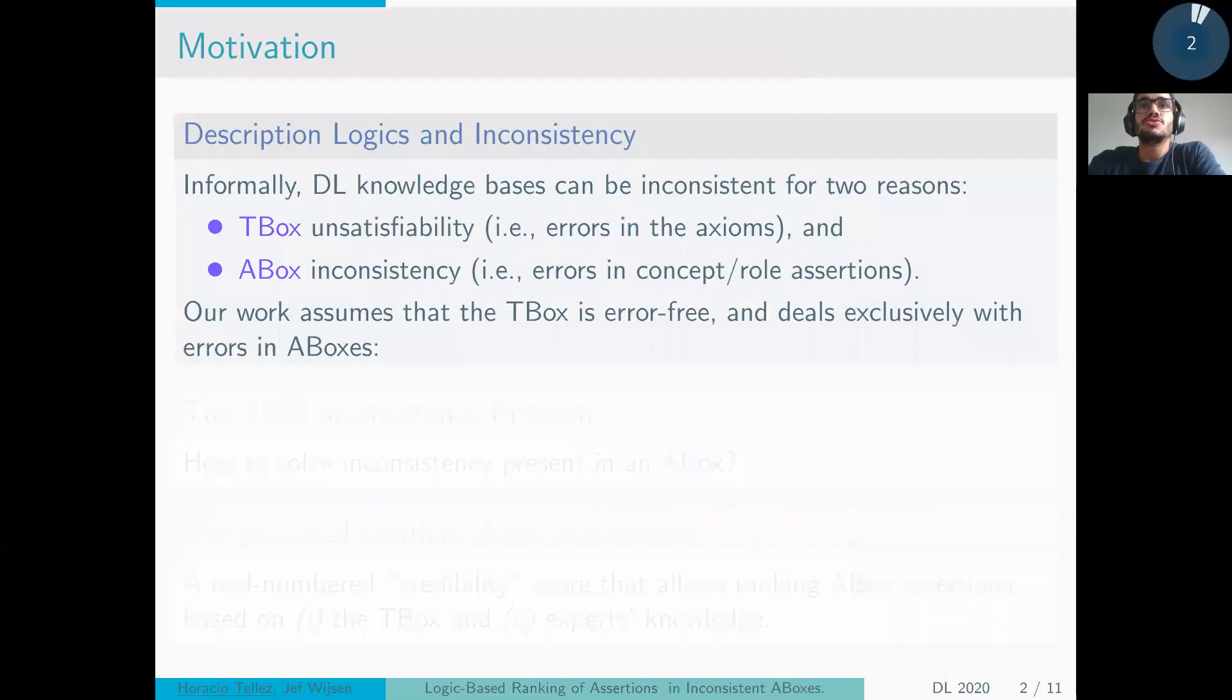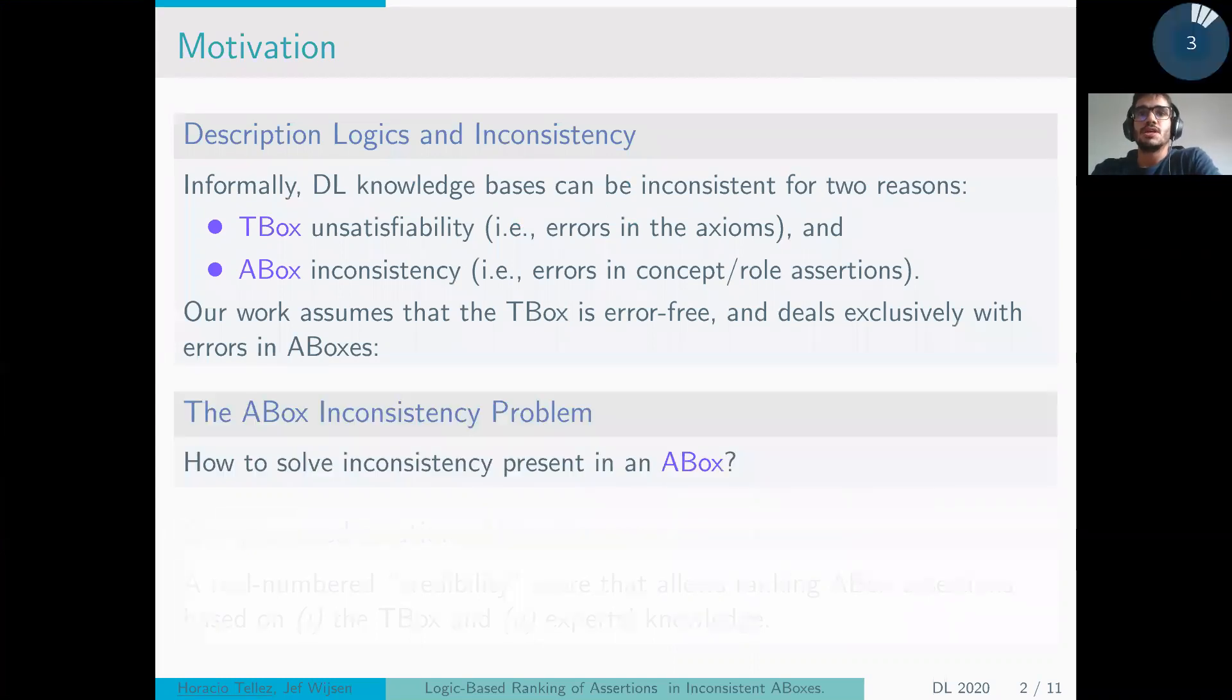In description logics, inconsistency usually presents in two forms. The first, T-box unsatisfiability, and the second, A-box inconsistency. In our line of work we always assume that the T-box is error-free, so that left us with the A-box inconsistency problem and how to solve it.